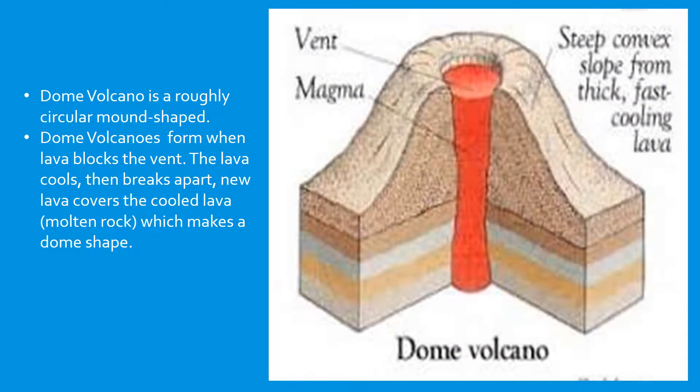A dome volcano is a roughly circular mound shape. Dome volcanoes form when lava blocks the vent. The lava cools then breaks apart. New lava covers the cooled lava, which is molten rock, making a dome shape.